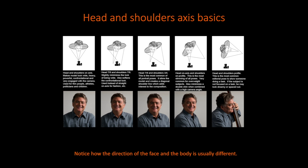The next one is called a seven-eighths pose. It slightly minimizes the look of being wide and softens the confrontational look. Instead of having the model look directly at the camera, they're looking a little bit to the side. The triangle coming off the eyes is aimed to one side of the camera, and the shoulders are aimed to the other.